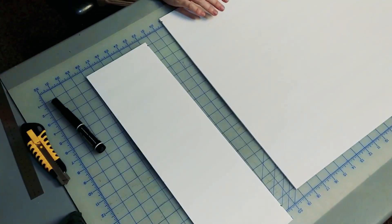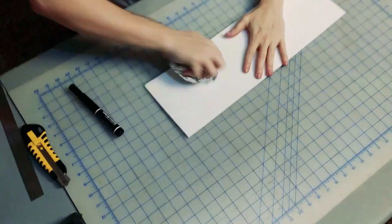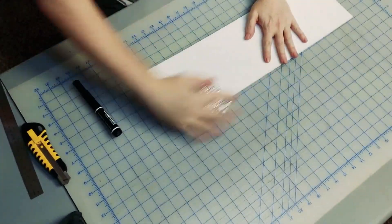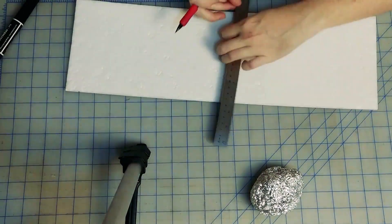We begin by cutting out a section of foam board, peeling off one side of the backing, and then texturing it with a ball of aluminum foil. Here we begin to measure out the sections for the brickwork.